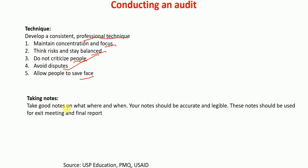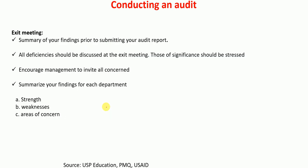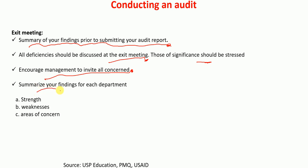Auditors should take good notes on what, where, and when. The notes should be accurate and legible, and should be used for the exit meeting and final report. In the exit meeting, the auditor presents a summary of findings prior to submitting the audit report. All deficiencies should be discussed at the exit meeting and those of significance should be stressed. The exit meeting should encourage management to invite all concerned, and auditors should summarize findings for each department including strengths, weaknesses, and areas of concern.